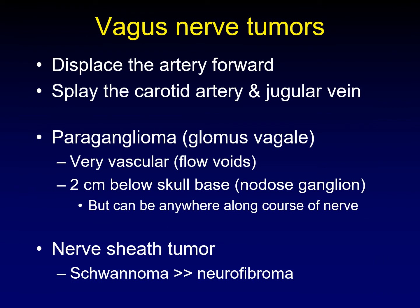Regarding tumors arising from the vagus nerve: when a tumor arises in the vagus nerve, the artery is displaced forward, and the arterial and venous structures are splayed away from one another — because the vagus nerve runs between them. Splaying of the internal and external carotid arteries is not part of vagus nerve tumors. A paraganglioma arising from the vagus nerve is a glomus vagale tumor; you look for splaying of the carotid artery from the jugular vein. These most commonly arise about two centimeters below the skull base at the nodose ganglion, but can occur anywhere along the vagus nerve. Another type of vagal tumor is a nerve sheath tumor — schwannomas are far more common than neurofibromas.